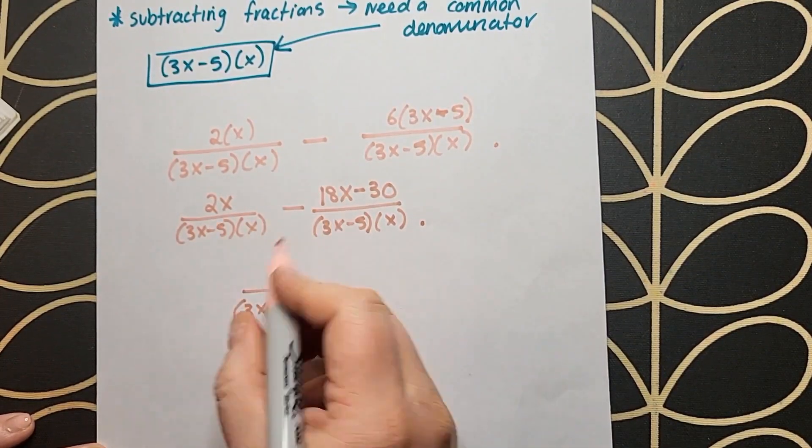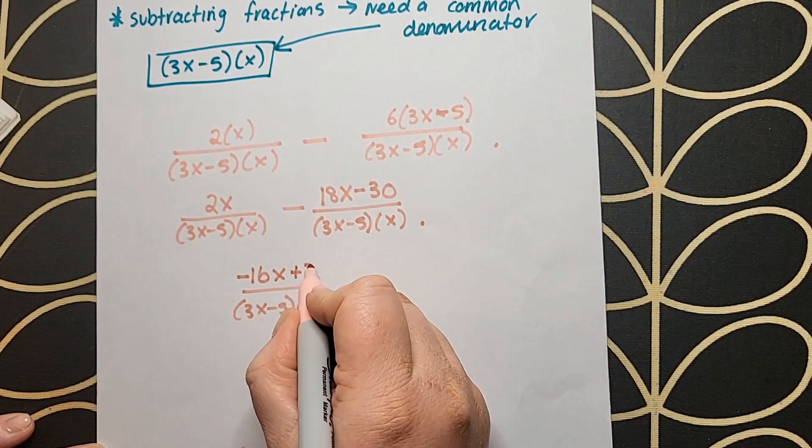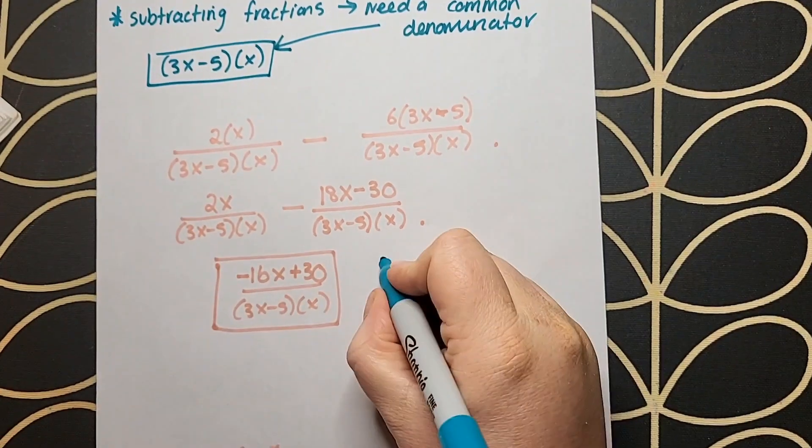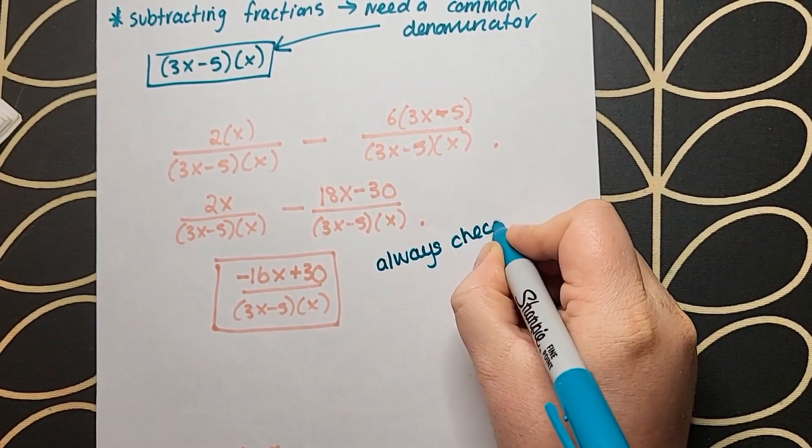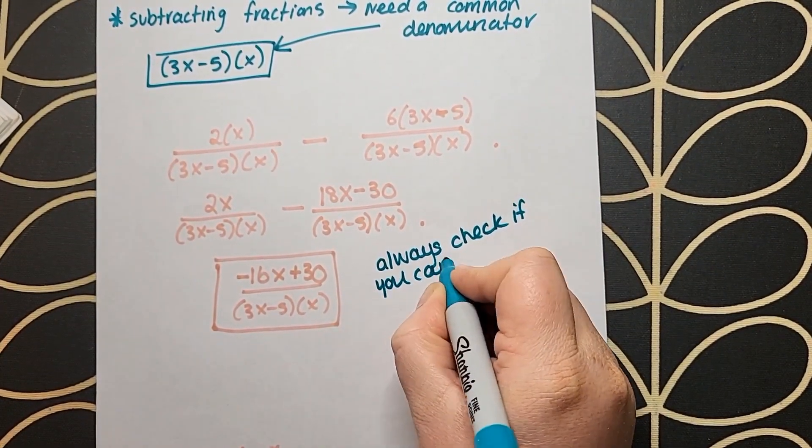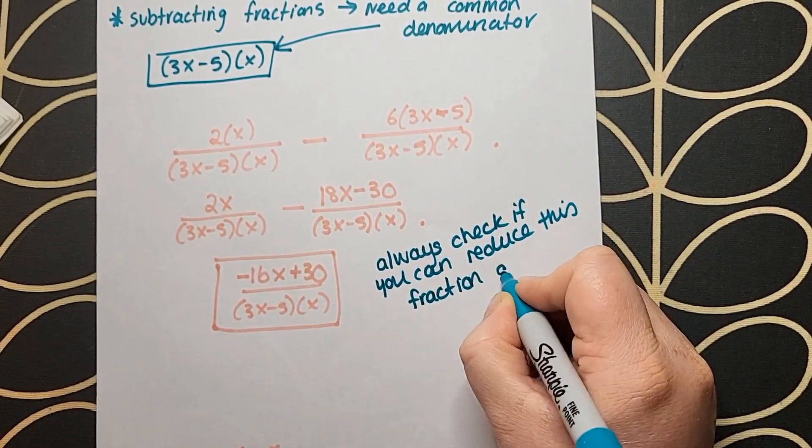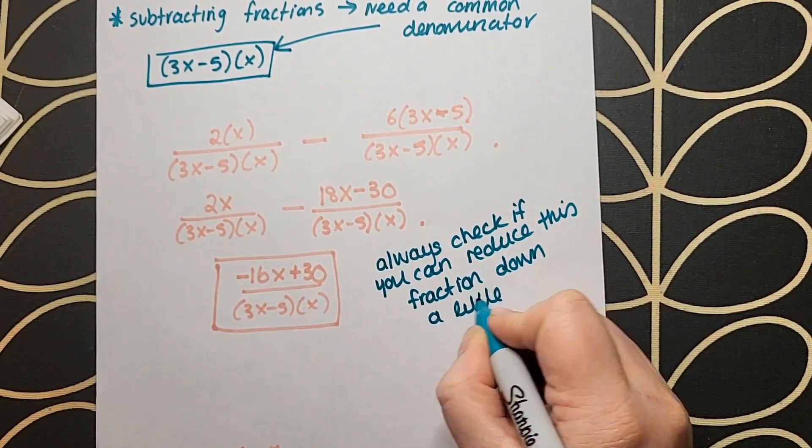I do my workings out on the top. I combine my fractions and I get -16x + 30 on the top, and then I have my denominator (3x - 5) by x. We generally don't multiply the denominators together because we are leaving an opportunity there for us to do any simplifying down further if it's needed.